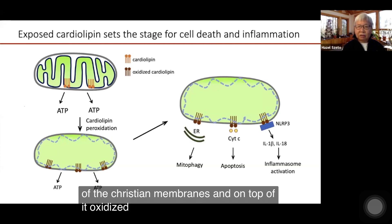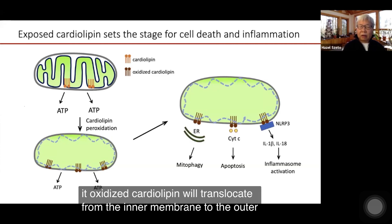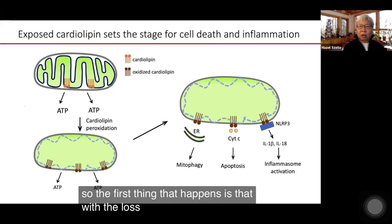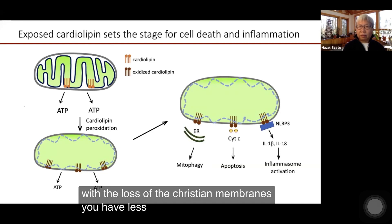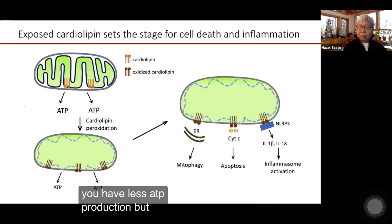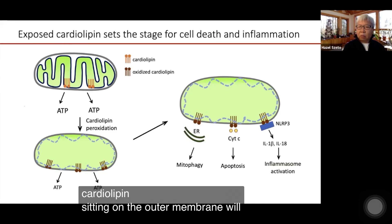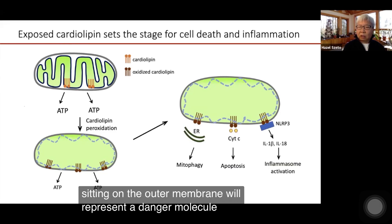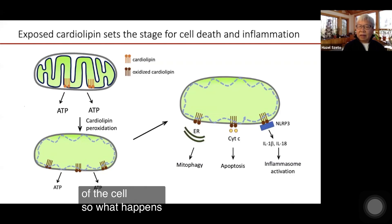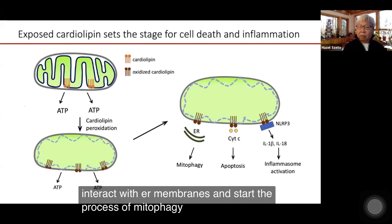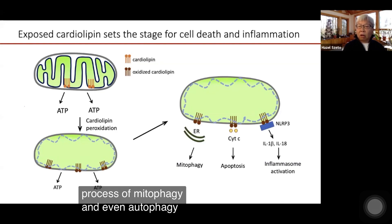On top of that, oxidized cardiolipin will translocate from the inner membrane to the outer mitochondrial membrane. The first thing that happens is that with the loss of the cristae membranes, you have less ATP production. But beyond that, the cardiolipin sitting on the outer membrane will represent a danger molecule to the rest of the cell. This cardiolipin can interact with ER membranes and start the process of mitophagy, and even autophagy.